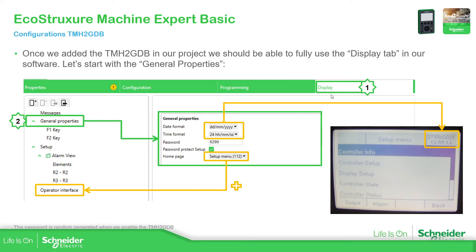Once we are in the display part, we can see in the left part that we have some menus. If we go to the messages, it's related to when we are on an issue trying to program something. What is important here to start with is the general properties. This is just the basic information for the display — you can see there is the date and time that allows us to see in the top right corner of the display.